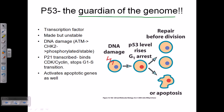P53 also helps in the repair of DNA. It is not an enzyme that directly repairs DNA, but rather a master protein that recruits other proteins to the site of DNA damage and directs them to repair it. For example, if DNA damage happens due to UV radiation, a mutation can occur there. This mutation needs to be fixed; otherwise it can be transferred to the next cells and trigger changes in those normal cells.